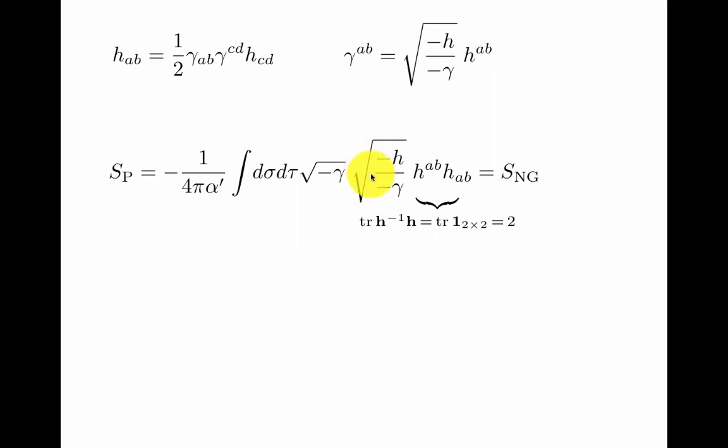You plug that back into the Polyakov action, and it reduces very quickly to the Nambu-Goto action that we had to start with, because these two determinants cancel. And this is just a constant trace that gives you the right normalization we had before.